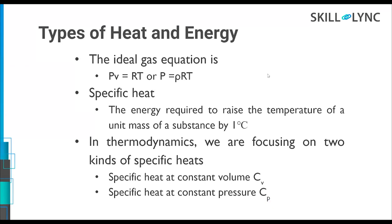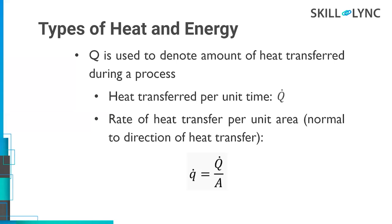In heat transfer notation, capital Q denotes the total amount of heat transferred during a process, and small q is heat transfer per unit area. Both are important since for many heat transfer problems we want to understand over a cross-section how much heat has been transferred. In most cases, heat is lost or gained through surfaces, so the heat transfer over that surface is the major metric we study.